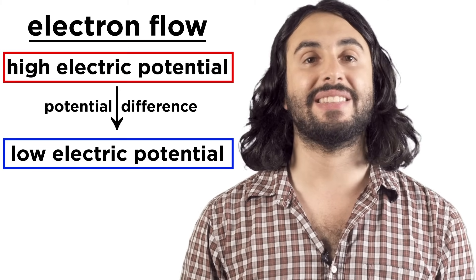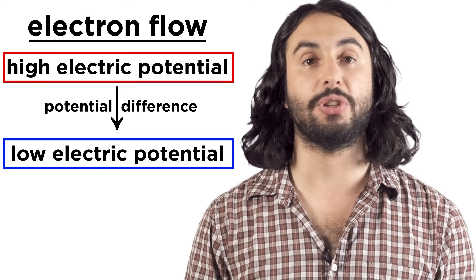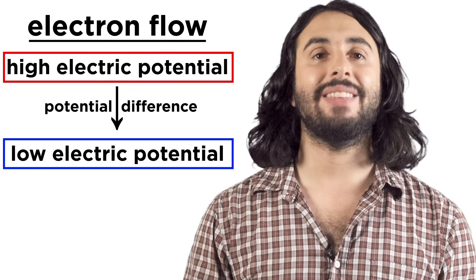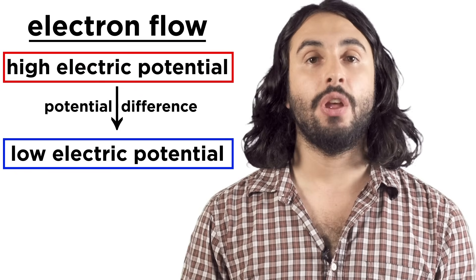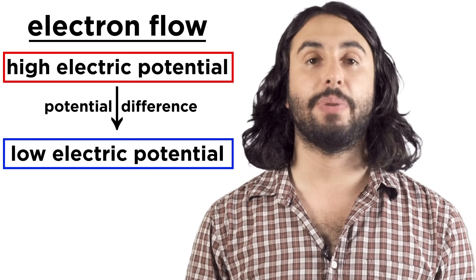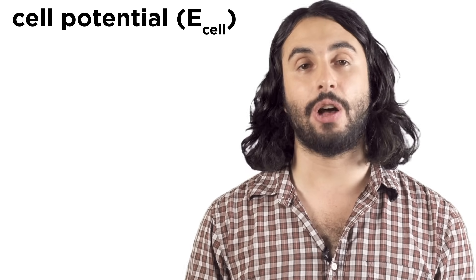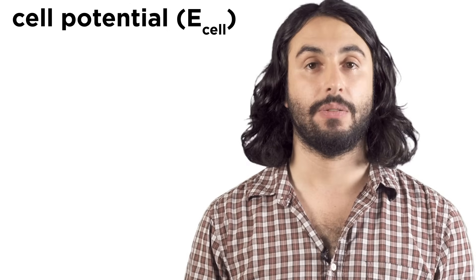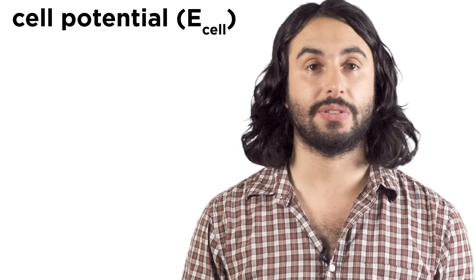Potential difference is the difference in electric potential between two points. In the case of a voltaic cell, those points would be the anode and the cathode, and their potential difference is called the cell potential, or E-cell. This will be expressed in volts.